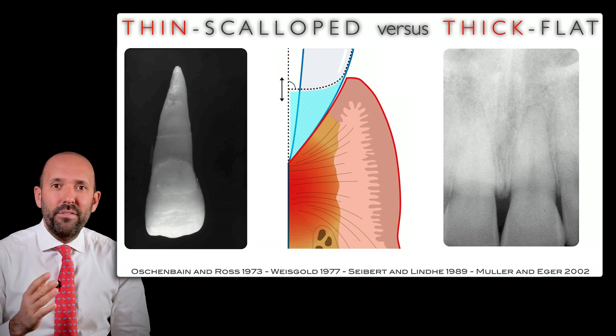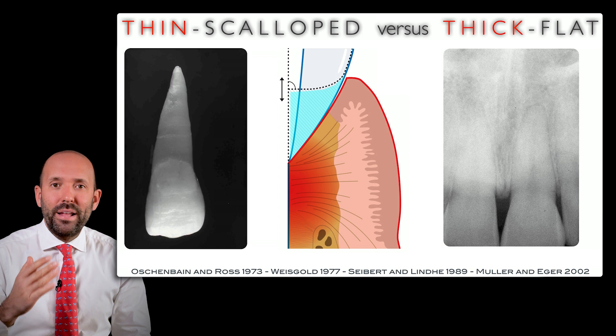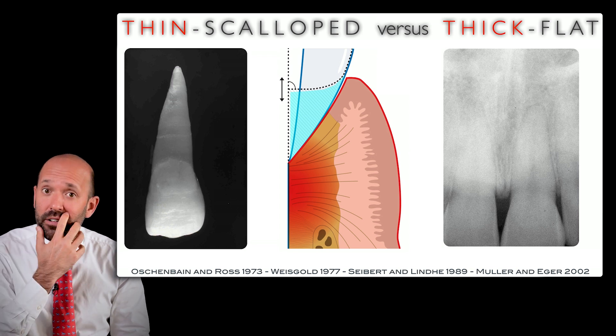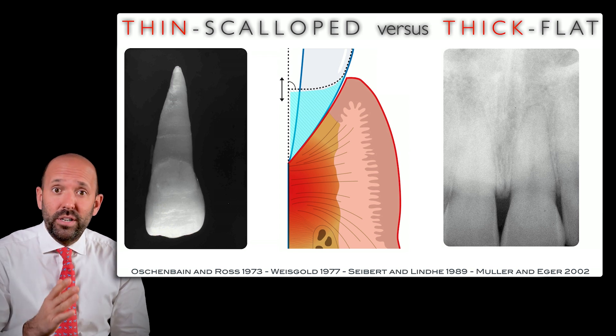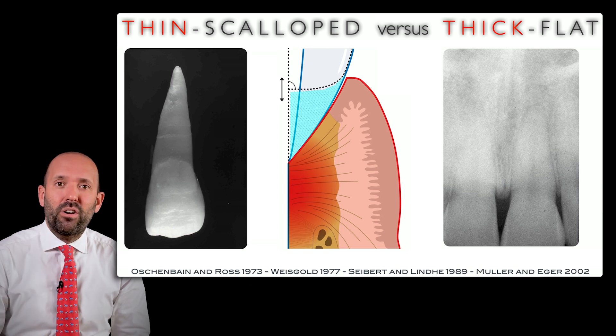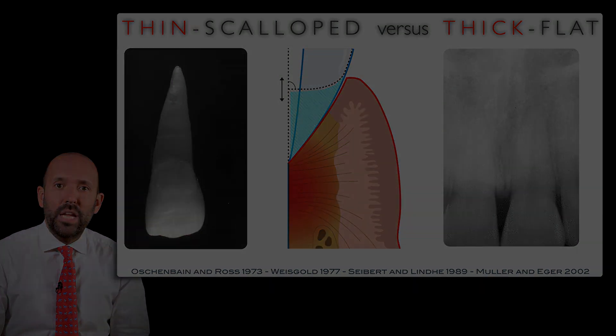So we might have a much better benefit with the subgingival vertical preparation in a thin biotype, because they have a triangular root shape.